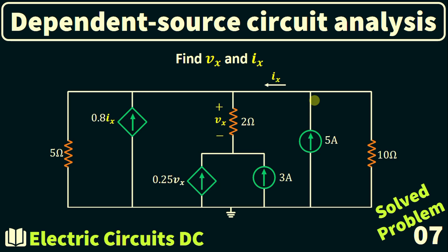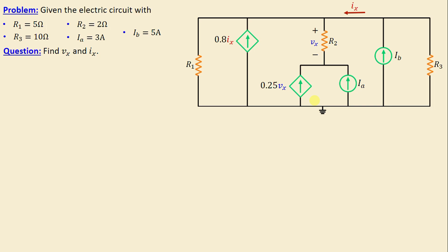Solve problem number 7. Let's consider this network consisting of three resistors labeled R1 through R3, along with two independent current sources Ia and Ib. We currently observe the presence of dependent sources, especially a voltage controlled current source and a current controlled current source.